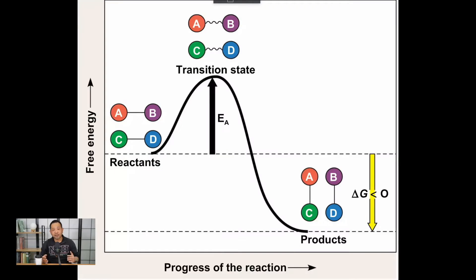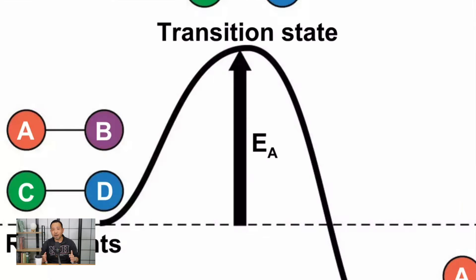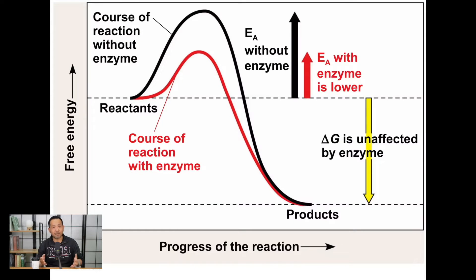Just like that, activation energy will inhibit even spontaneous reactions from happening, and this is doubly true for anabolic reactions. Where enzymes come into play is by reducing the activation energy required for both catabolic and anabolic reactions to occur. In a diagram of a catabolic reaction, the free energy of the reactants is greater than the products, but the activation energy hump inhibits the reaction. In the second diagram, this activation energy has been reduced as a result of enzyme presence.